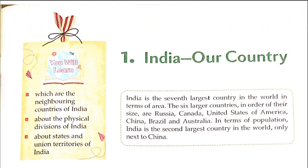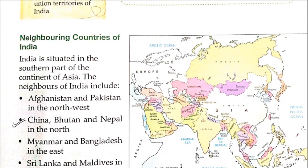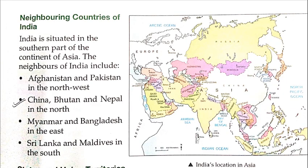India is the 7th largest country in the world in terms of area. In terms of population, India is the 2nd largest country in the world, only next to China. China is number one, and Bharat is the 2nd largest country in the world, and is part of the continent of Asia.